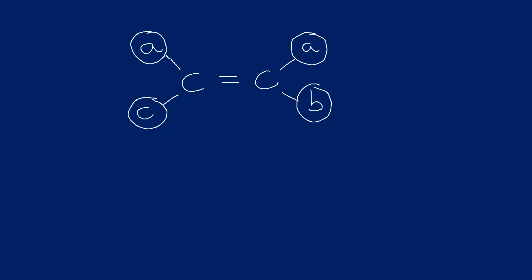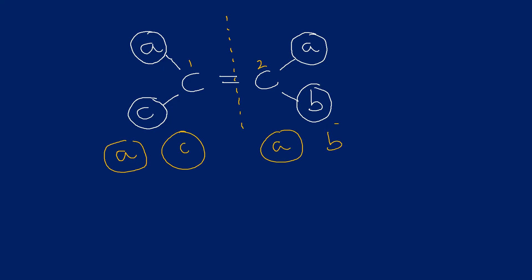So what does an asymmetric alkene look like? As you might have guessed, it's when the carbons either side of the double bond have two different groups attached - not the same two groups. On the left hand side there's an A and a C; on the right hand side there's an A and a B. You could have one group the same, as we do here with A on both sides, or all four could be different - just as long as you don't have the same two groups on both carbons.